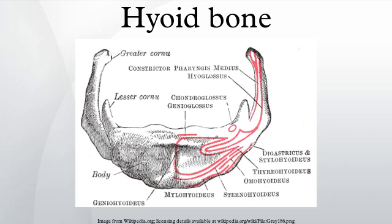Ossification commences in the greater cornua toward the end of fetal life, in the body shortly afterward, and in the lesser cornua during the first or second year after birth. Until middle age the connection between the body and greater cornua is fibrous.